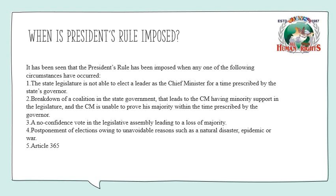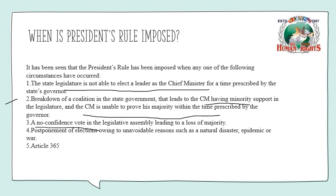The most important thing to understand is when President's Rule is imposed. The first condition is that the state legislature is not able to elect a leader as Chief Minister. The second is the breakdown of a coalition in the state government leading to the Chief Minister having a minority in the legislature and being unable to prove majority. The third condition is that a no-confidence vote in the legislative assembly leading to loss of majority has been passed. The fourth is postponement of elections due to unavoidable circumstances, making it impossible to elect a Chief Minister. The last condition relates to Article 365.